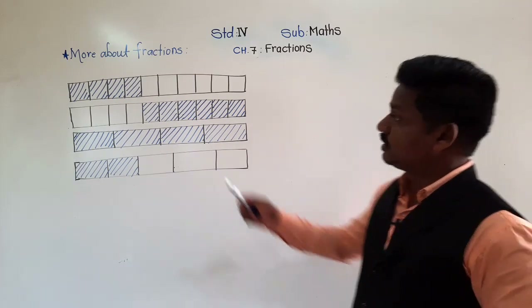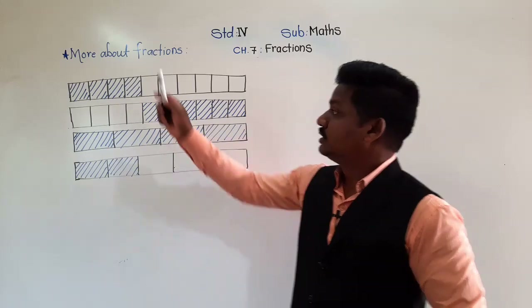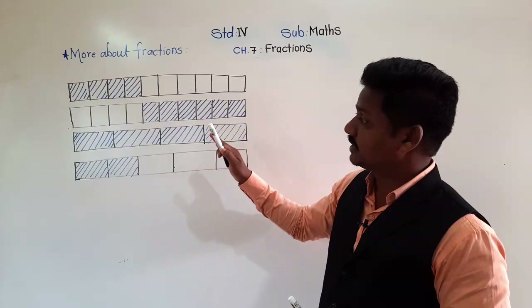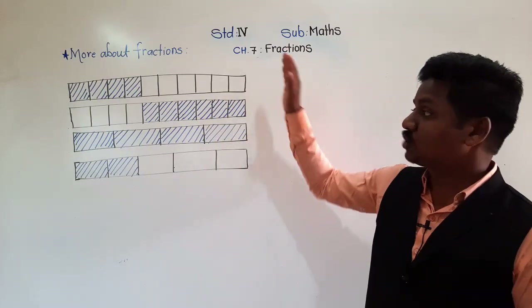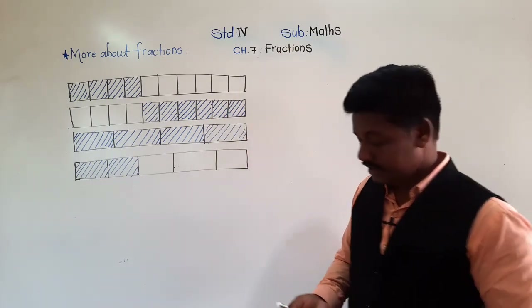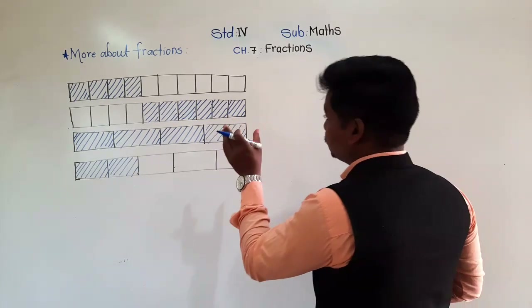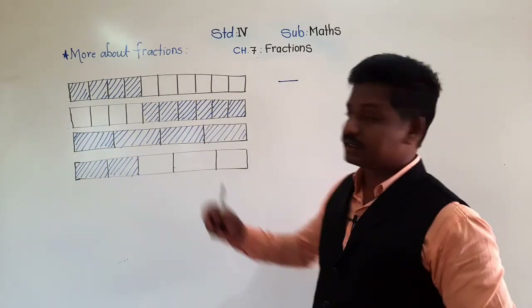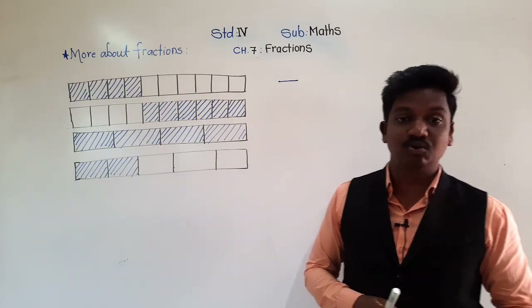In today's lecture we are going to learn something more about fractions. Here I have drawn some strips which are divided into equal parts and some parts are shaded. We will learn how to write a fraction for the shaded part or unshaded part. In the first figure, if we want to express the shaded portion of the first figure in the form of a fraction, how do we express it?